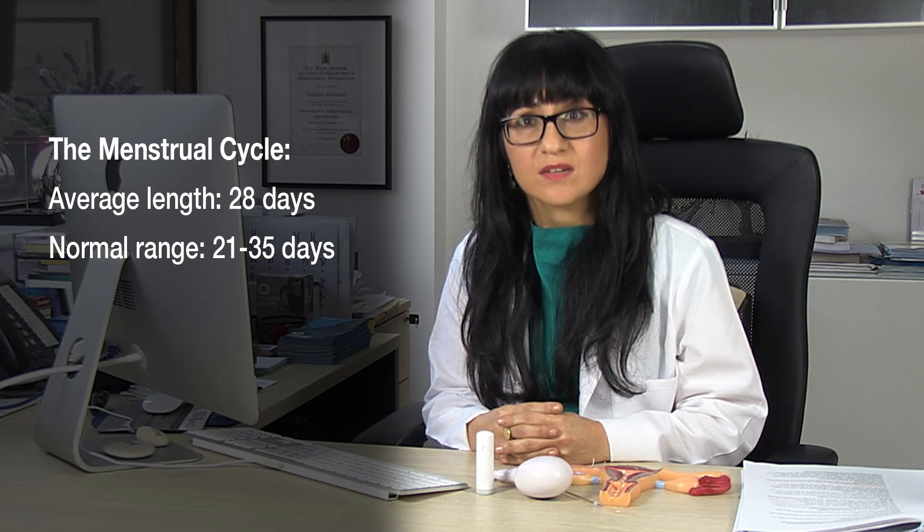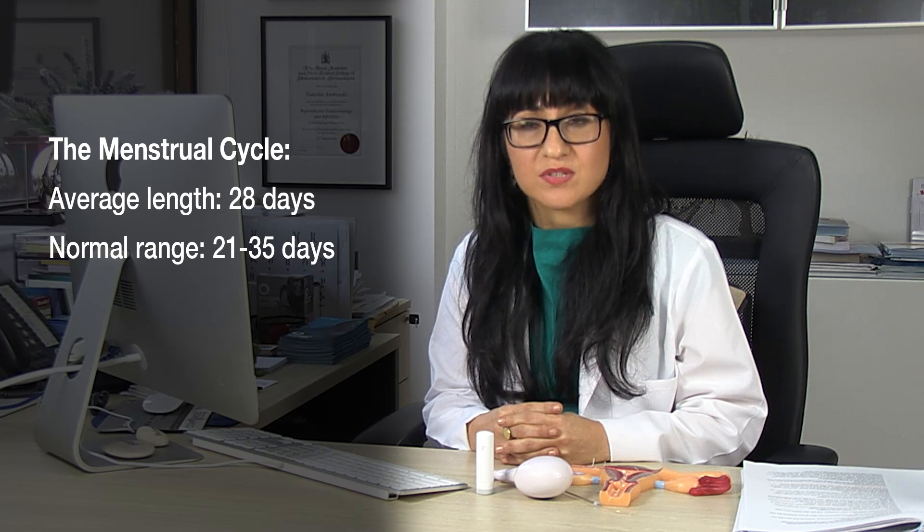The menstrual cycle is a series of phases that the endometrium and the ovary go through. Essentially the ovary releases an egg after having gone through those steps, and the endometrium, the lining of the uterus, has prepared itself to receive a fertilized egg.